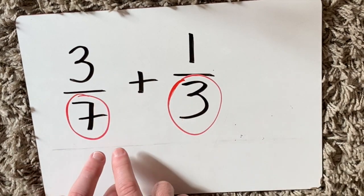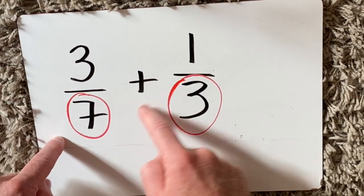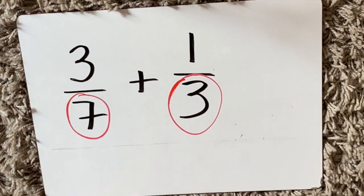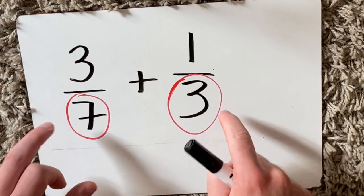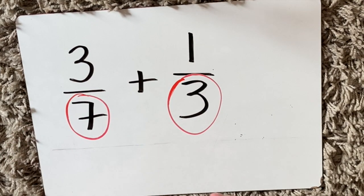Let's take a look at the example here: three sevenths plus one third. I need to change the denominators so they are the same.